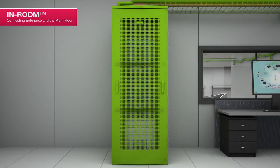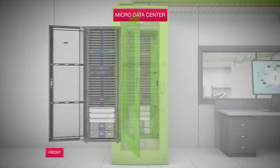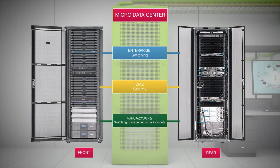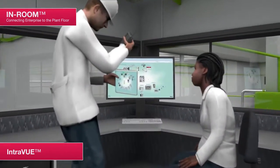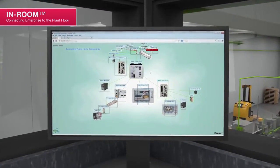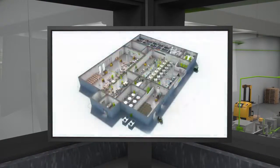The micro data center allows deployment of compute and storage equipment for production critical applications connected to the plant floor. It provides a secure and protected environment for enterprise and plant floor networks to run applications found on the plant floor. IntraView software, deployed in-room, provides visibility and documentation with advanced analytics to optimize in-panel and in-field TCP/IP systems.